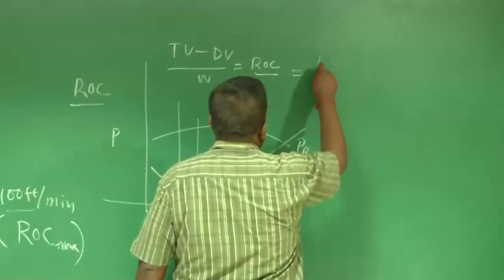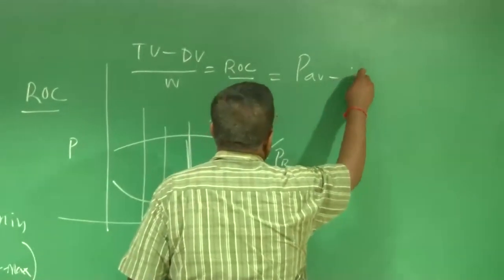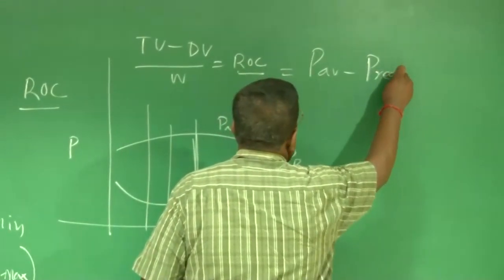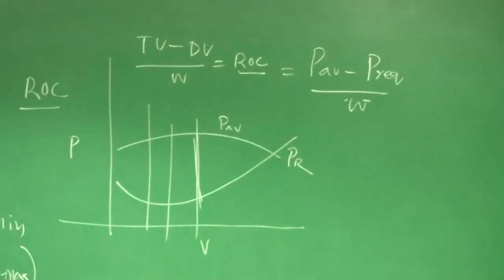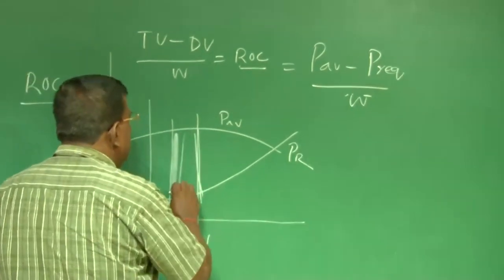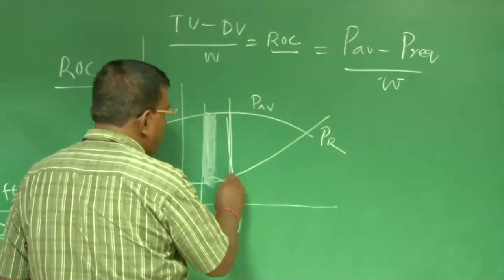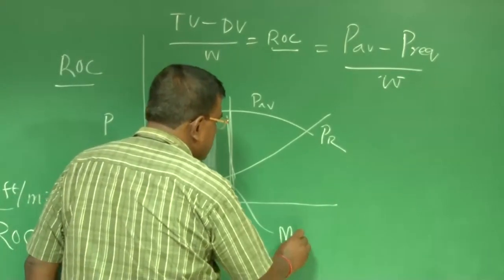So, this also, I interpret as P available minus P required by W. Let us understand, if I really want a good rate of climb, I should fly somewhere where this is maximum, this gap is maximum. So, corresponding to that speed, I should fly to achieve rate of climb maximum.